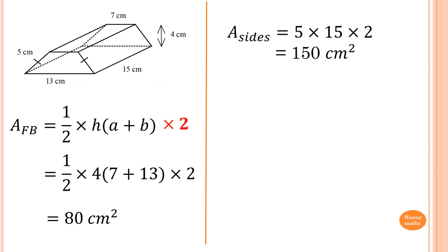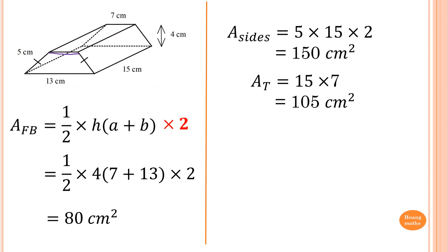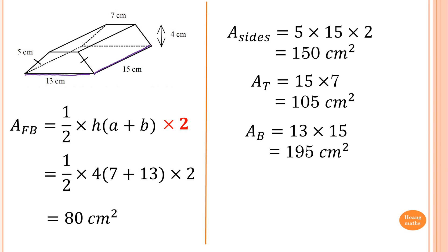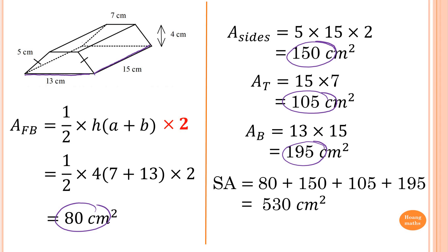The area of the top panel is 15 times 7, giving me 105 square centimeters. The base is 13 times 15, giving me 195 square centimeters. Adding all areas: 80 plus 150 plus 105 plus 95 gives me 530 square centimeters.